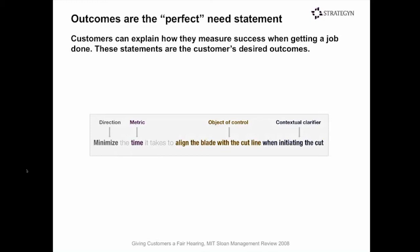We call these statements desired outcome statements. What we've done is create a language around which to communicate what a need is. These statements are useful across all functions — sales, marketing, development, R&D — and they are actionable and controllable in the design of a product. You can take two competing solutions and see which one is best at, for example, minimizing the time it takes to align the blade with the cut line. The statement is also valid over time, and coming up with the perfect need statement has been something we've worked on and applied in nearly every industry.